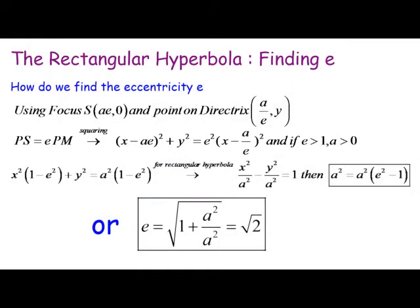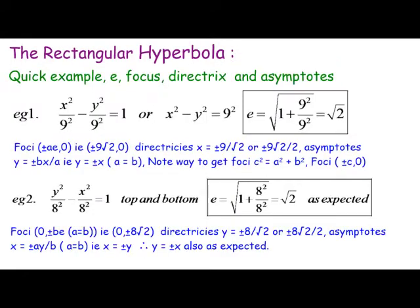So you can derive that the eccentricity is root 2 for rectangular hyperbolas. A couple of examples: we obviously get eccentricity root 2 as expected, because these are set up as rectangular hyperbolas.